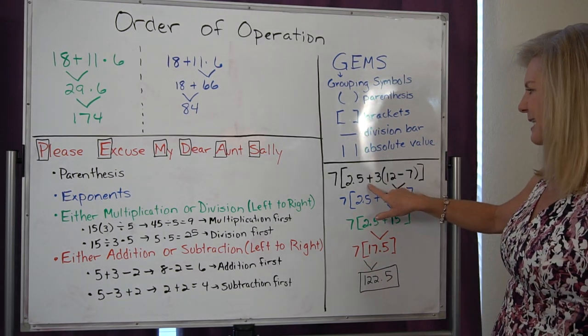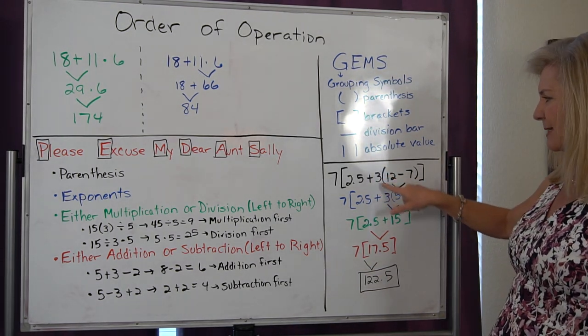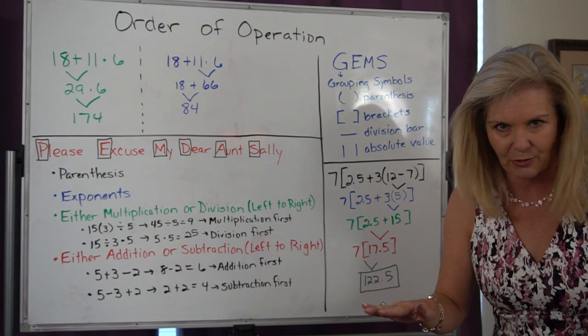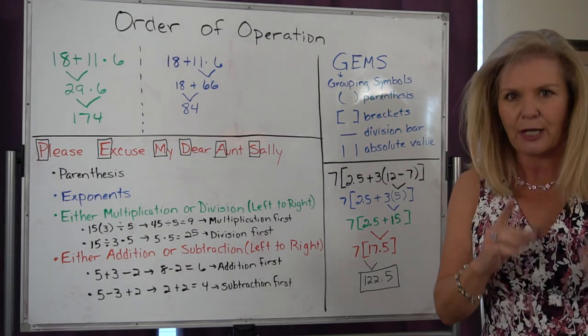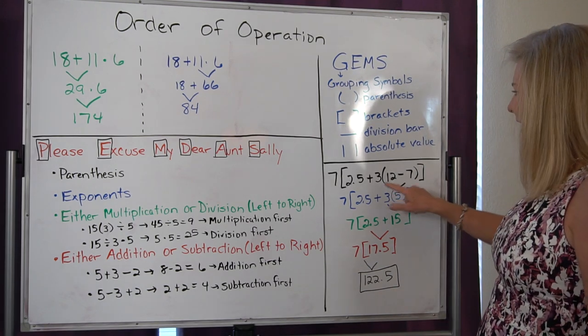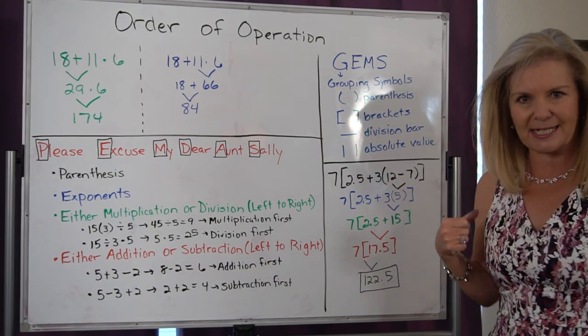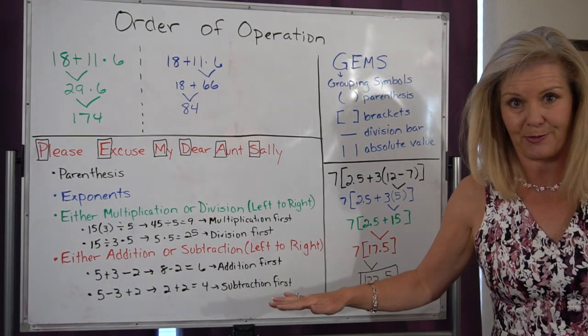So inside my brackets, I see addition, I see multiplication. There's no sign symbol there, though. Remember that we don't use a multiplication symbol in algebra. I have my parentheses and I have my subtraction. So I have a whole bunch of operations there.